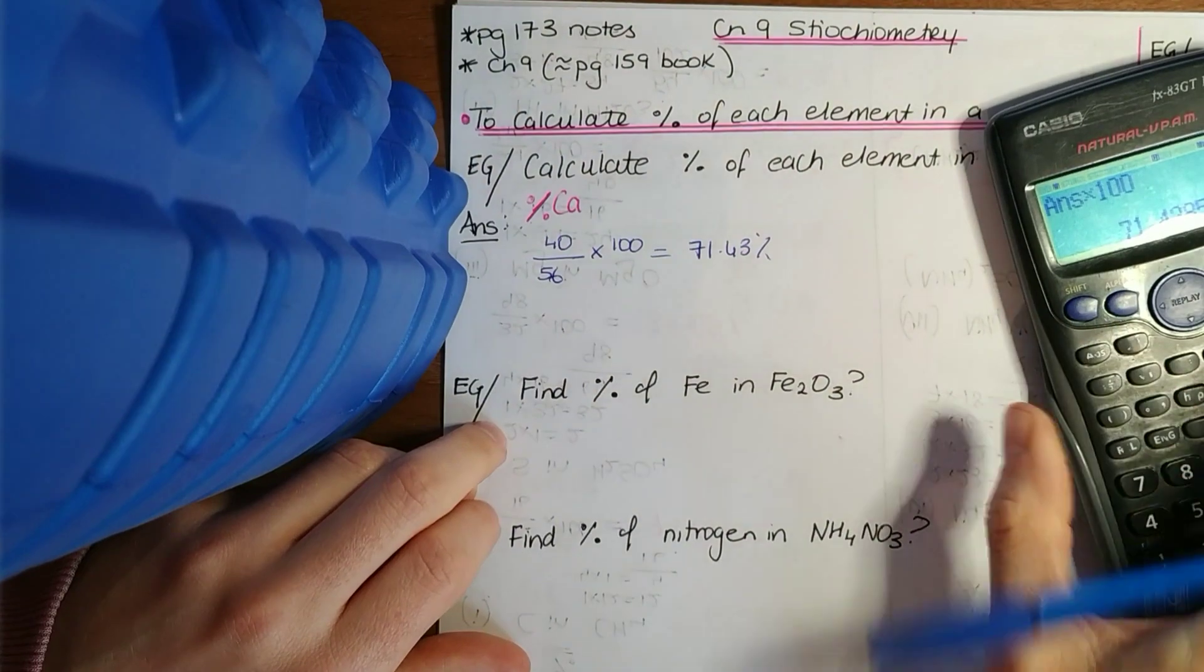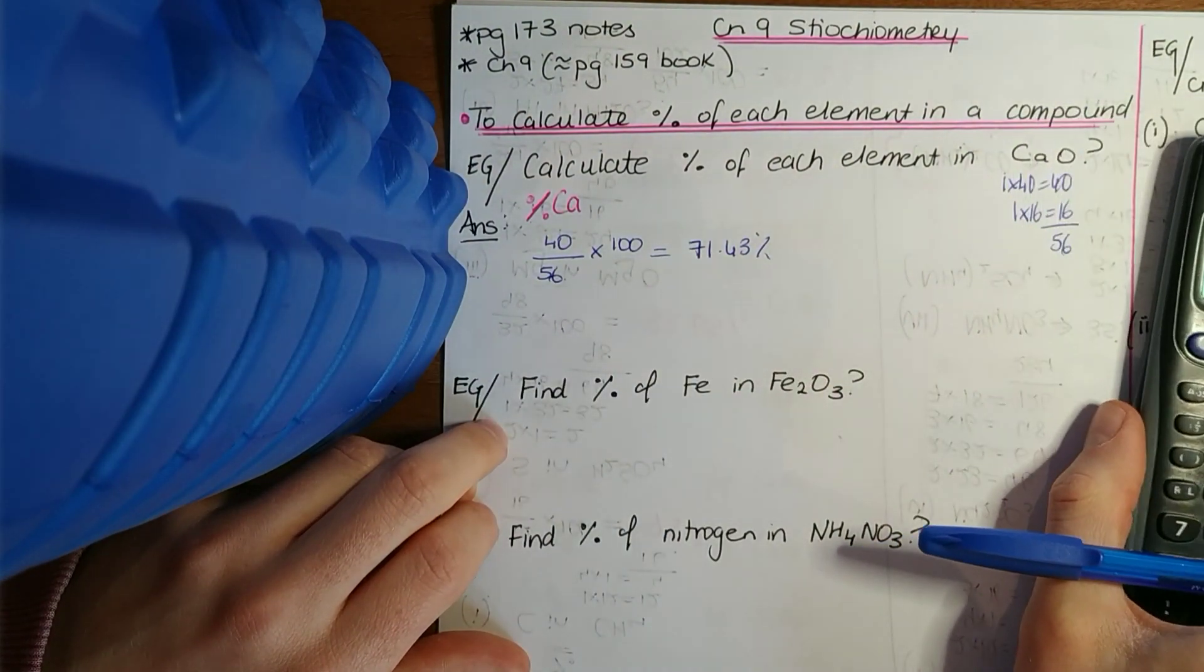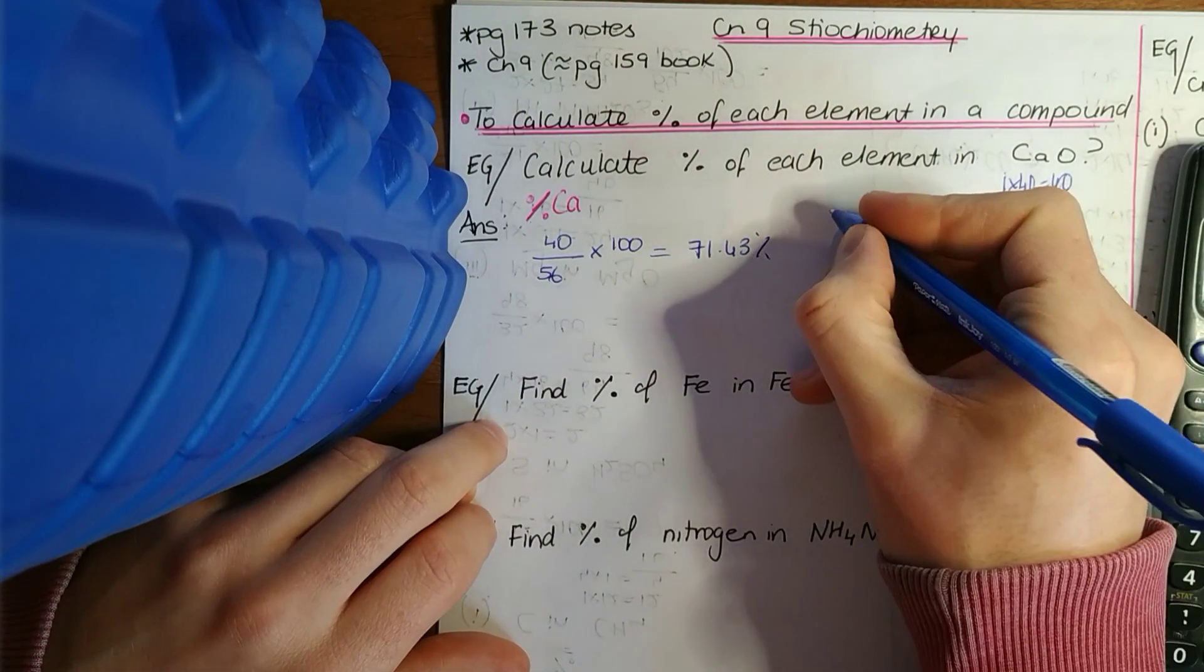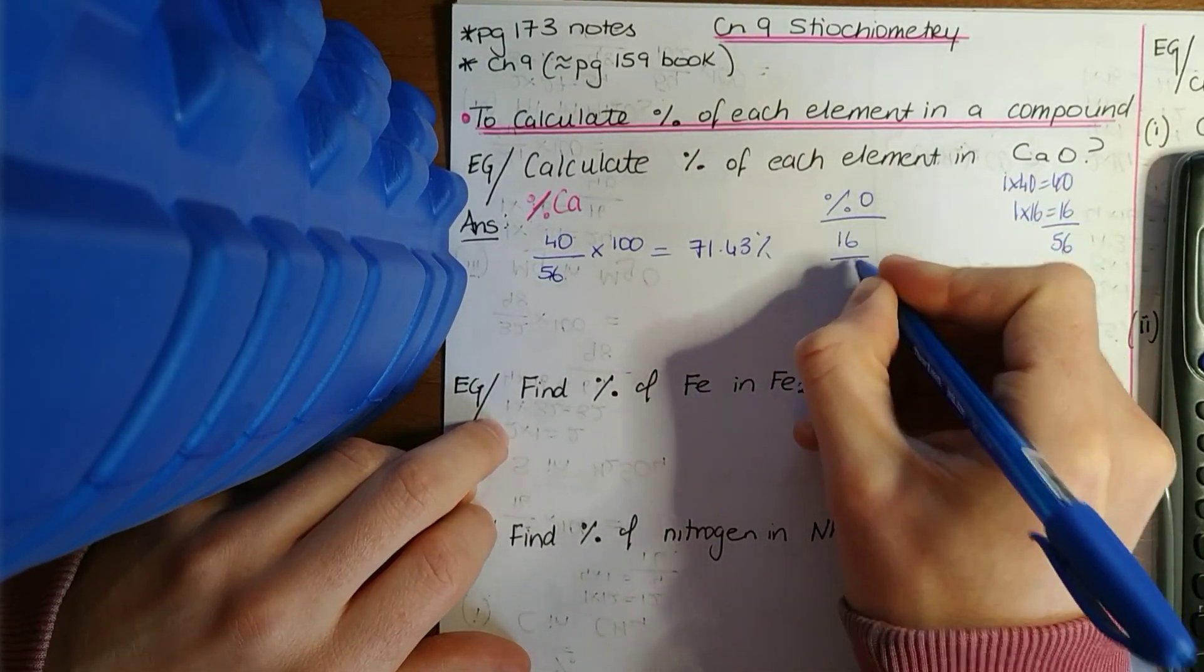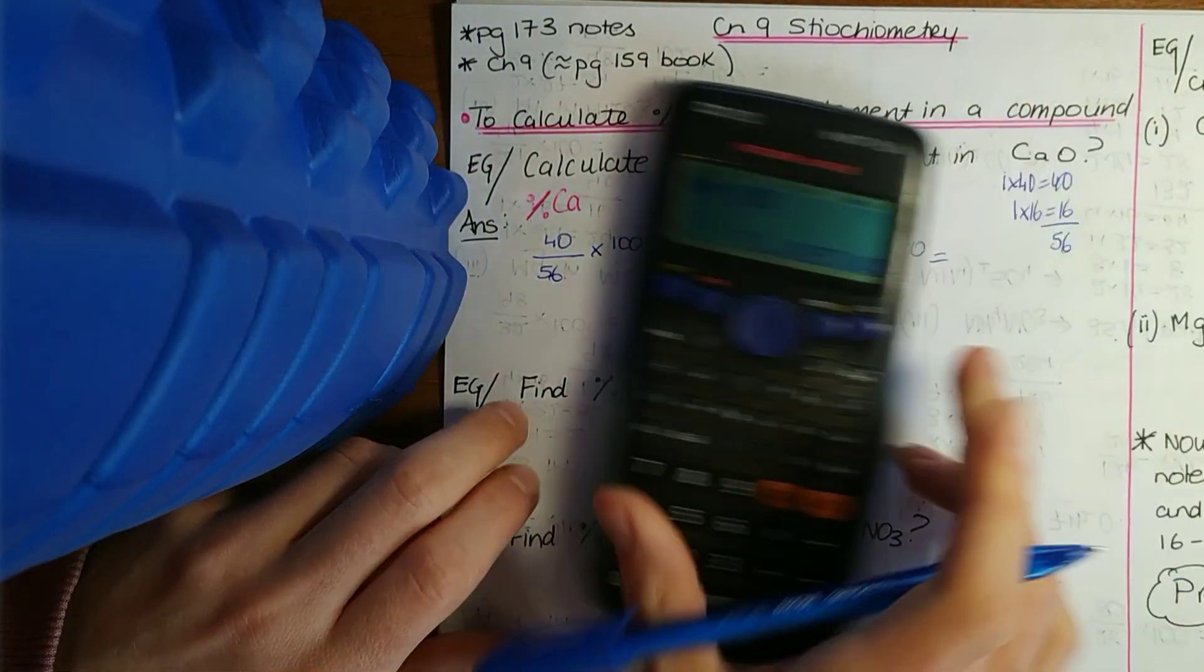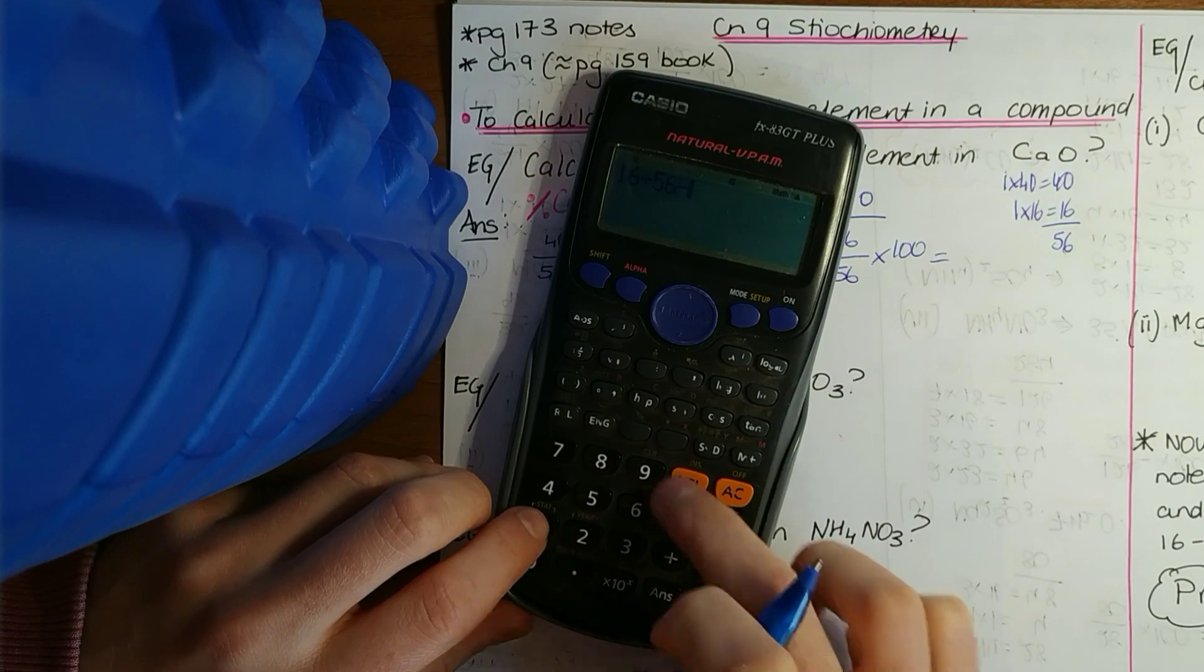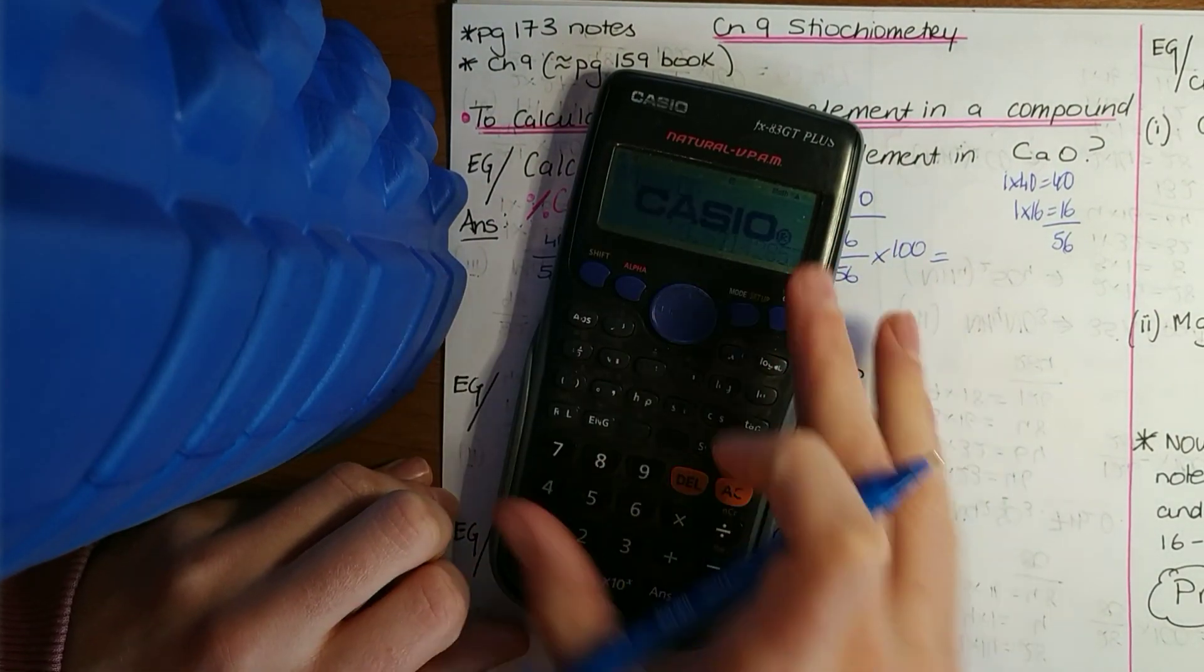Now automatically to work out the oxygen, you just take that away from 100 and you get 28.57. If we work out the percentage of oxygen: the mass of oxygen over the total mass or the relative molecular mass, times it by 100. 16 over 56 times that by 100, 28.57, exactly as we said.